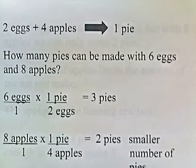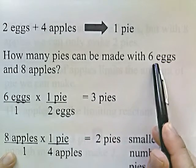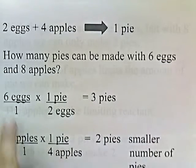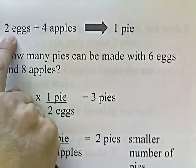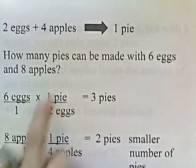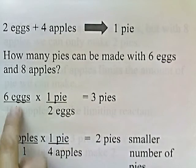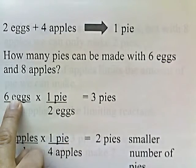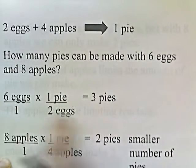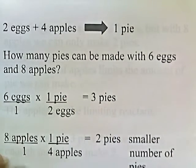If we factor label it, we have six eggs and we want to figure out how many pies we can make with six eggs. Put six eggs over one, and then according to the equation, for every two eggs you can make one pie. So we convert eggs into pie: two eggs on the bottom and one pie on top, and we'll end up with three pies.